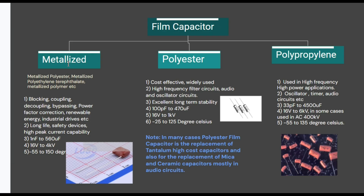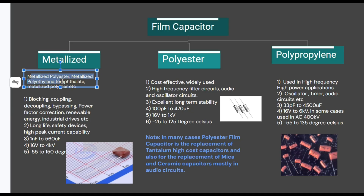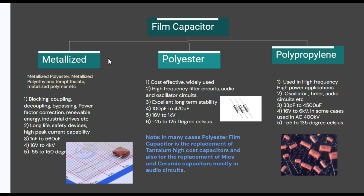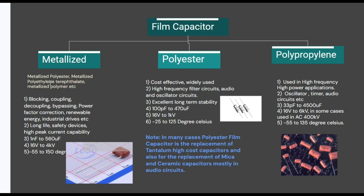Next is the film capacitor. There are many different types based on their dielectric, like plastic foil film, paper, and polycarbonate film capacitors. The most commonly used is the metallized film capacitor. Types include metalized polyester, metalized polyethylene terephthalate, and metalized polymer. Common uses include blocking, coupling, decoupling, bypassing, power factor correction, renewable energy, industrial drives, and safety devices. They have very long life with high peak current capability. Capacitance ranges from 1 nanofarad to 560 microfarad, voltage from 16 volts to 4 kilovolts, and operating temperature from minus 55 to plus 150 degrees Celsius.